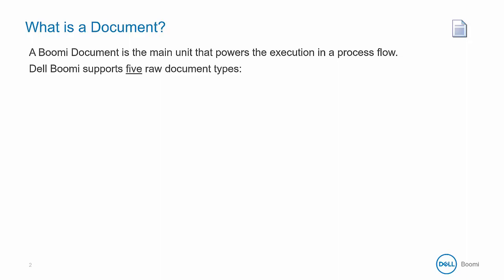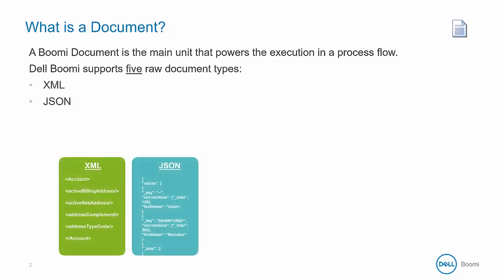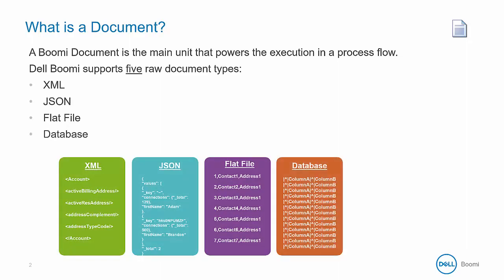The document is the main unit that powers the execution in a process flow. Dell Boomi supports five raw document types: XML, JSON, flat file, database, and EDI.